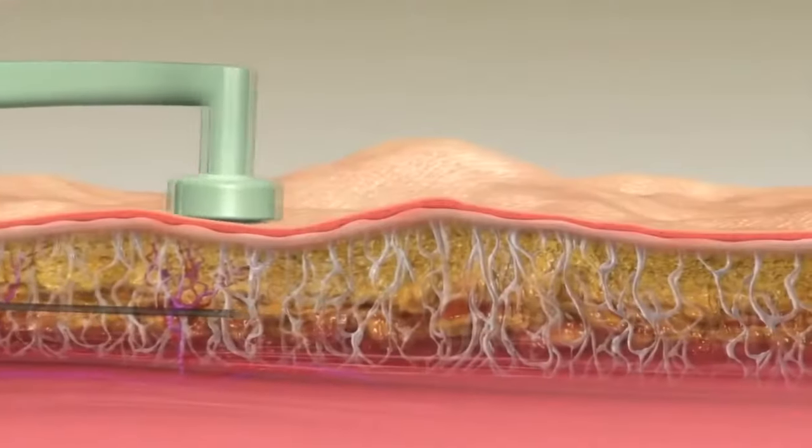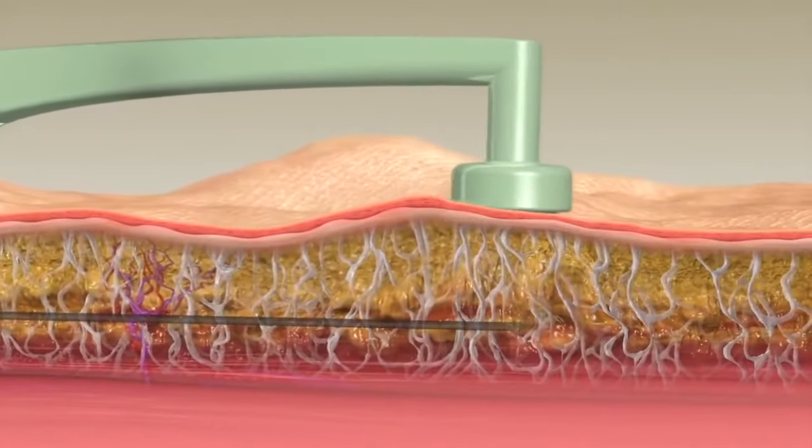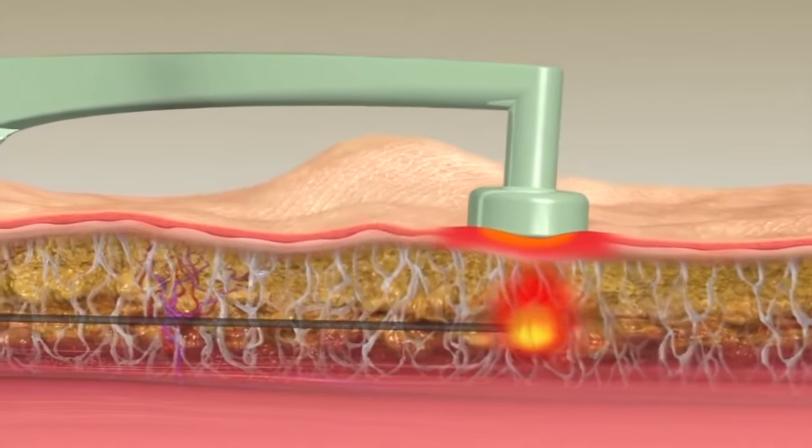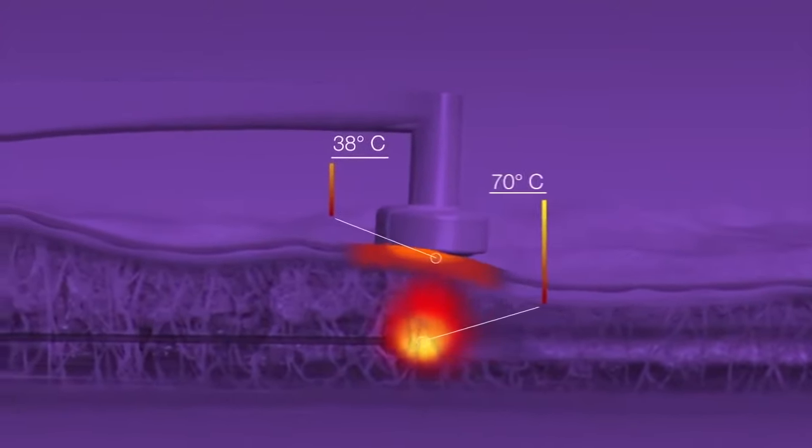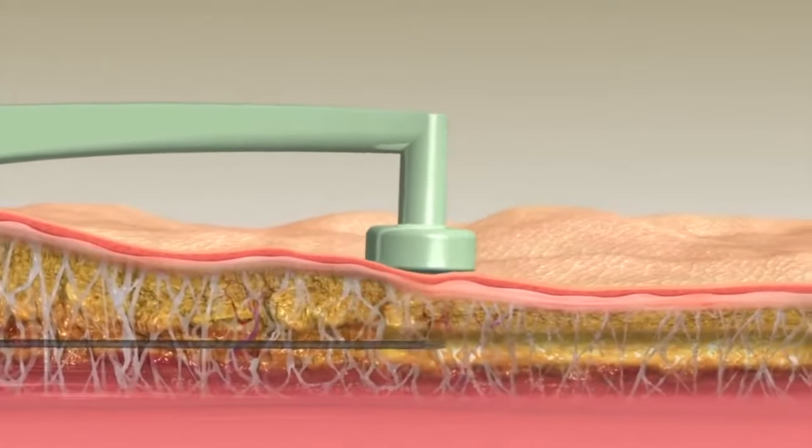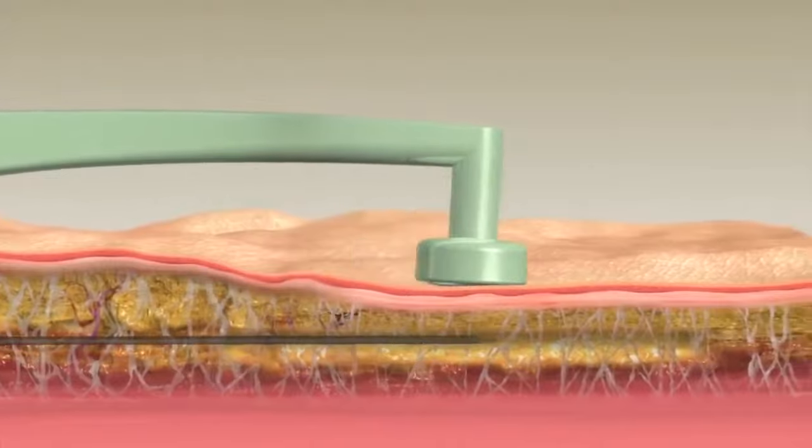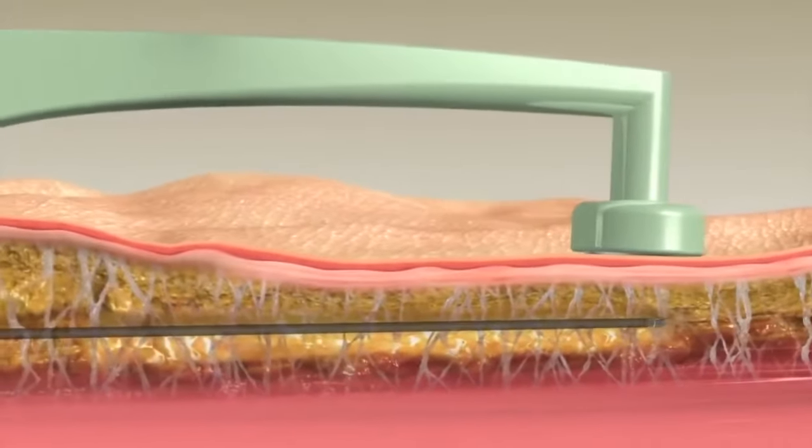The body-tight contouring procedure uses radiofrequency energy for internal fat lipolysis and external collagen contraction. RF energy flows from the internal cannula toward the external electrode placed on the skin surface. RF power is regulated based upon online measurements of skin temperature and tissue impedance.